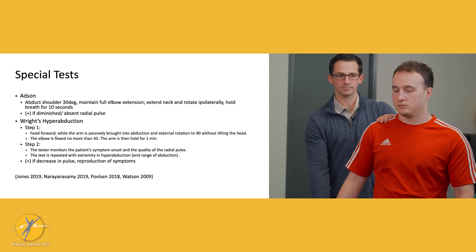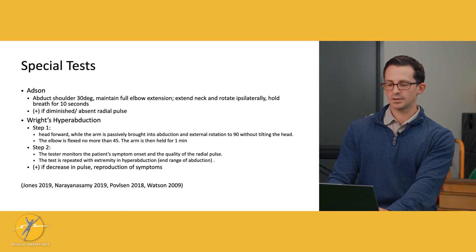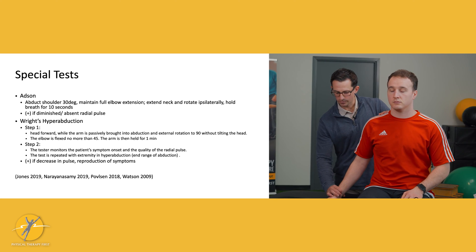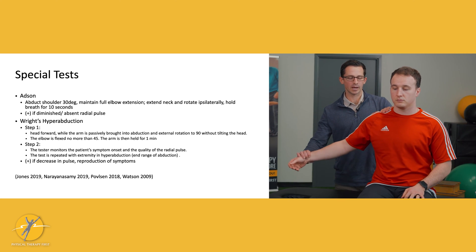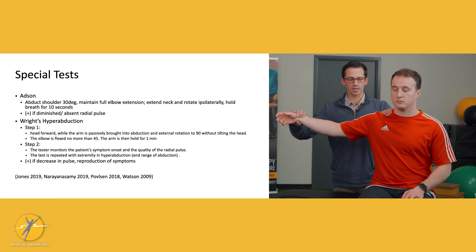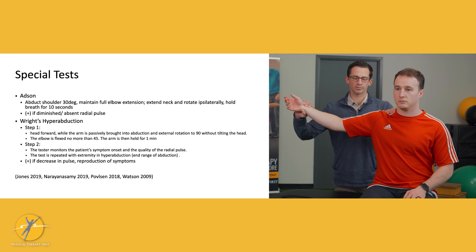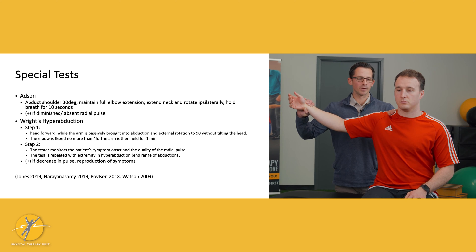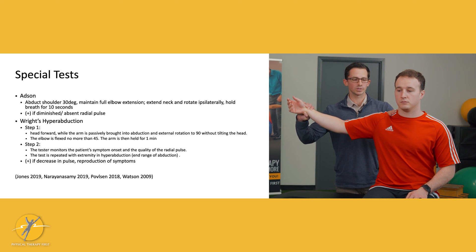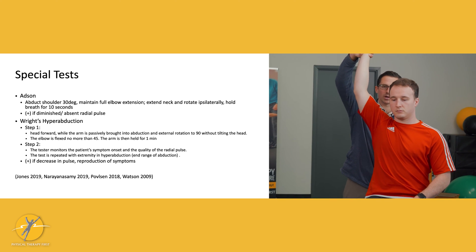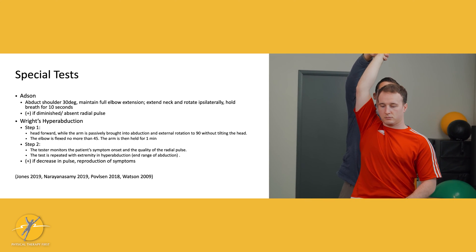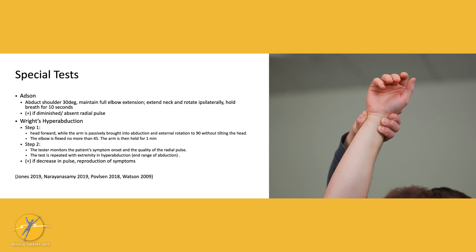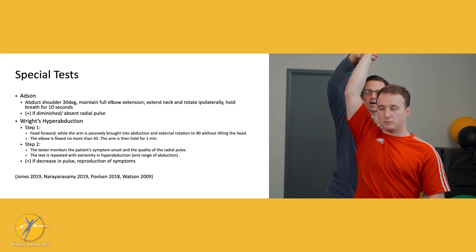Any diminished pulse, absent pulse, or reproduction of symptoms would be a positive test. Wright's hyperabduction is another test we should perform — it's a two-step test. We're going to feel the radial pulse and first abduct the arm to about 90 degrees, externally rotate, elbows flexed about 45 degrees, keeping the head straight, and feel the quality of the pulse. If there are no changes, then hyperabduct the arm — bring it all the way up and over the head — and hold for up to one minute. A diminished pulse or reproduction of symptoms would indicate a positive test.